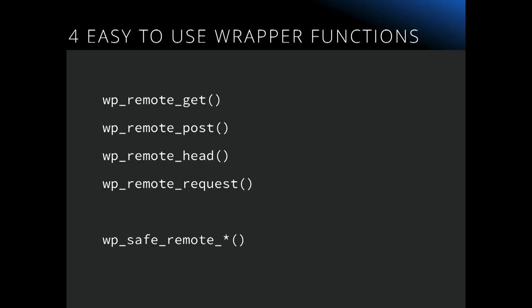It's built to work with any transport available. So no matter what's on the server — whether it's curl or one of the other transports — it should fall back and use one that will work. As far as using it goes, there are four helper functions: remote get, post, head, and request. They pretty much do what you'd expect. Get does a GET request. The first three are actually all wrappers for wp_remote_request and just pass in the method. You can use remote request if you need to do something else like a PUT or DELETE, if you're working with APIs that support that.